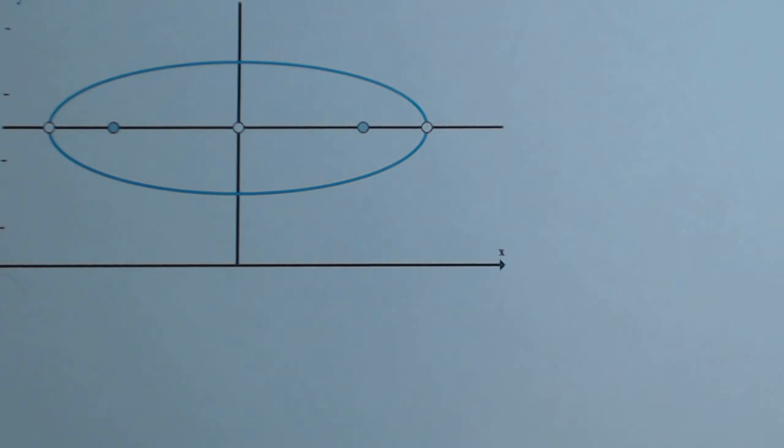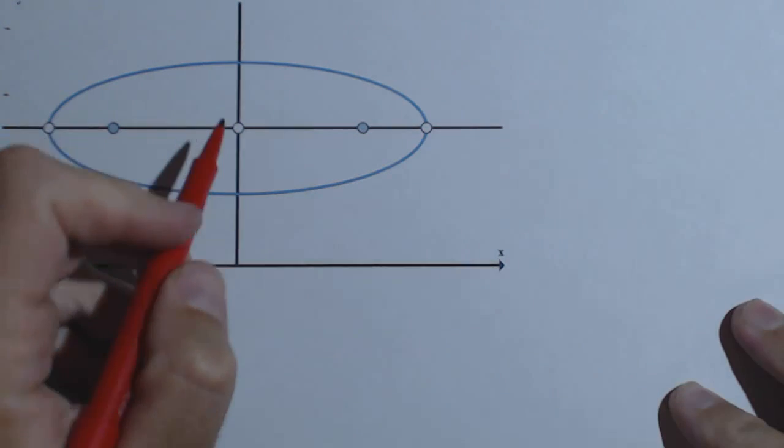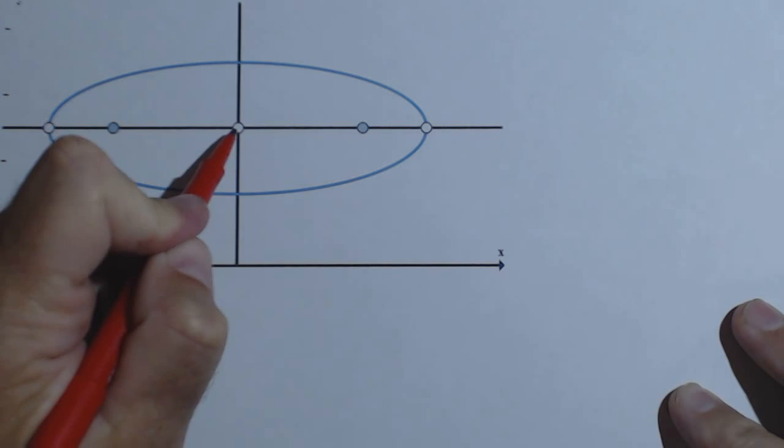In this video, we're going to talk a little bit about deriving the equation of an ellipse and some of its properties. So we've got the graph of a basic ellipse here. We'll talk about it being centered at 0,0, but this is going to apply for any ellipse.